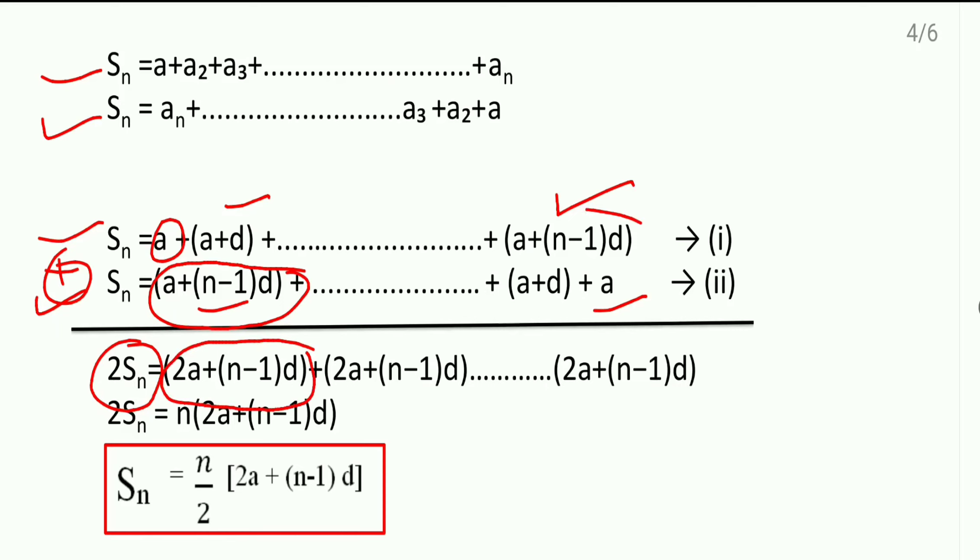If you will see, the ending terms here, the addition of them is also coming same. But, how many times this same addition is coming? That we don't know. It comes for n number of times. That's the reason we have written here n.